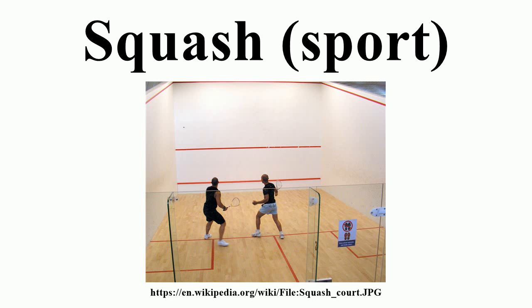The permitted maximum weight is 255 grams, but most have a weight between 90 and 150 grams. Squash balls are between 39.5 and 40.5 mm in diameter and have a weight of 23 to 25 grams. They are made with two pieces of rubber compound, glued together to form a hollow sphere and buffed to a matte finish. Different balls are provided for varying temperature and atmospheric conditions and standards of play. More experienced players use slow balls that have less bounce. A squash ball bounces more at higher temperatures and must be hit dozens of times to warm up at the beginning of a session.